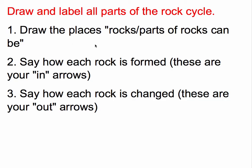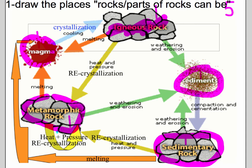There are three steps you need to do: draw all the places where rocks or parts of rocks can be, then say how each rock is formed — these are your in arrows — and say how each rock has changed — these are your out arrows. Think of this as cause and effect. I drew all these on my drawing in hot pink.